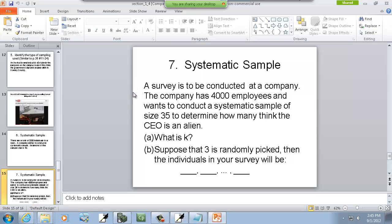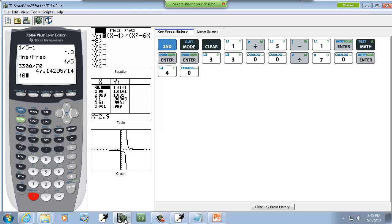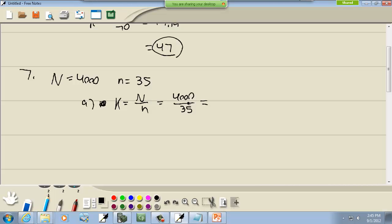And step, part a, then determine how, determine how many think the CEO is an alien. So what is K? Well, remember K is equal to capital N over little n. So we're going to have 4,000 over 35. So let's see what that is. 4,000 divided by 35. And we get 114. Remember, no matter what the decimal places, we always round down. So we'll go down to that.